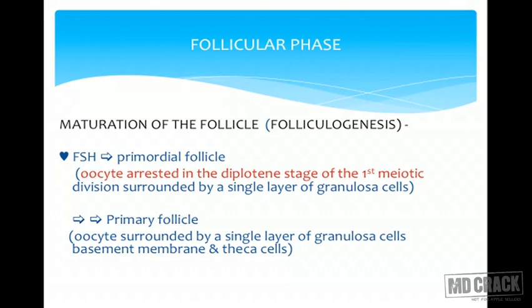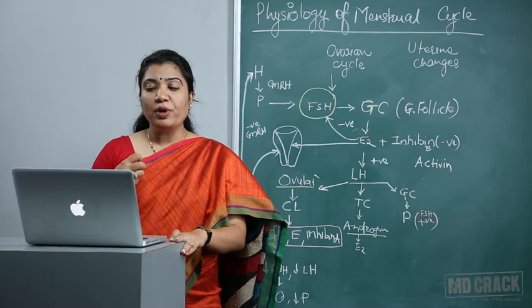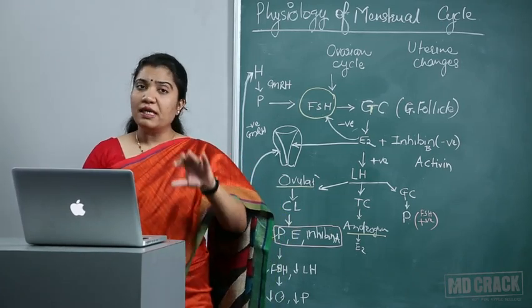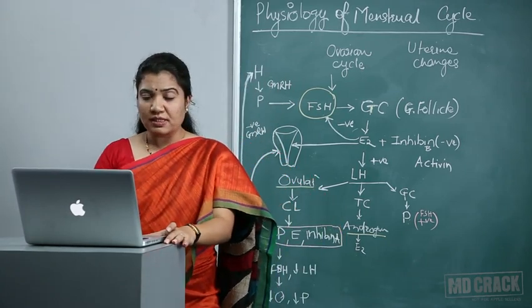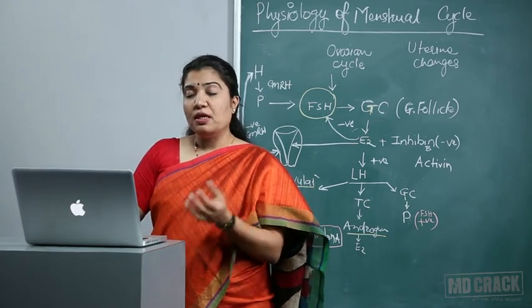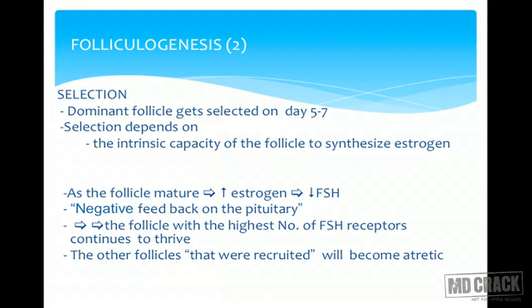In the primary follicle, the oocyte is surrounded by a single layer of granulosa cells, a basement membrane, and theca cells. The secondary or pre-antral follicle has the oocyte surrounded by zona pellucida and several layers of granulosa and theca cells. In the tertiary or antral follicle, fluid accumulates in a cavity called the antrum; the oocyte is eccentric in position and surrounded by granulosa cells called the cumulus oophorus, indicating it is about to leave the ovary.